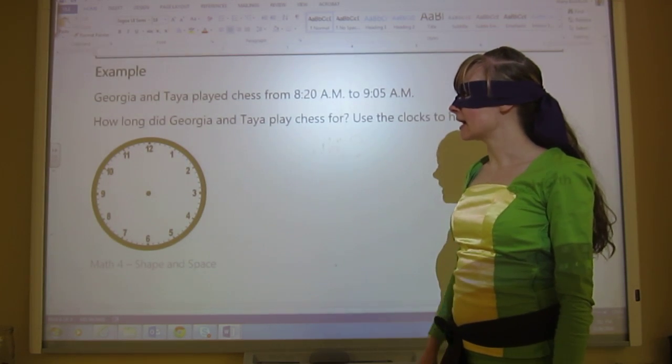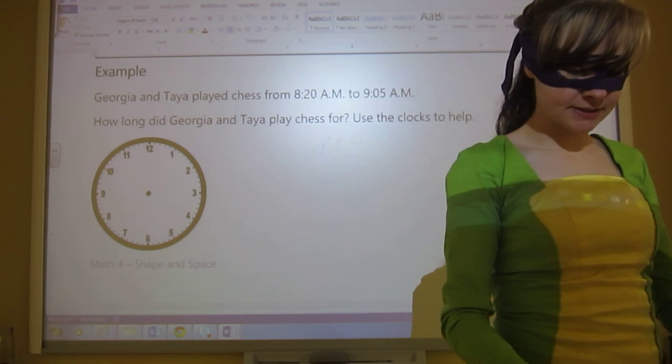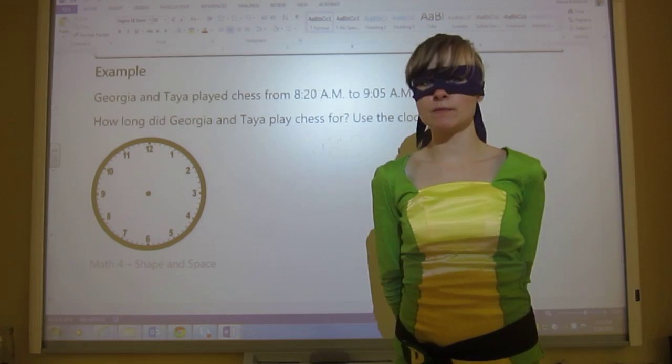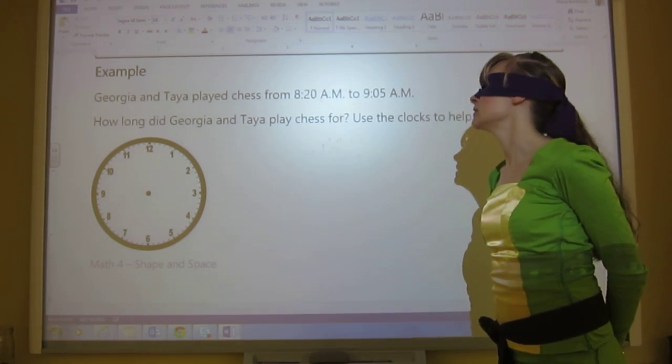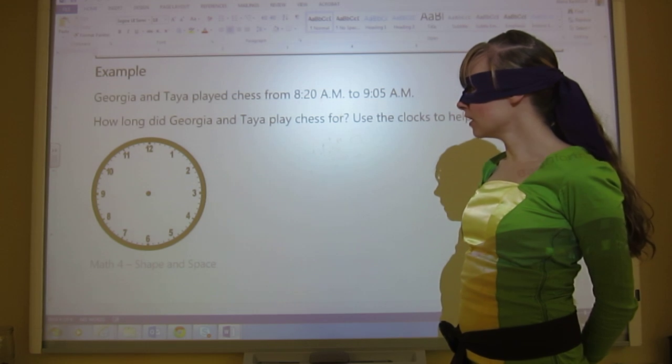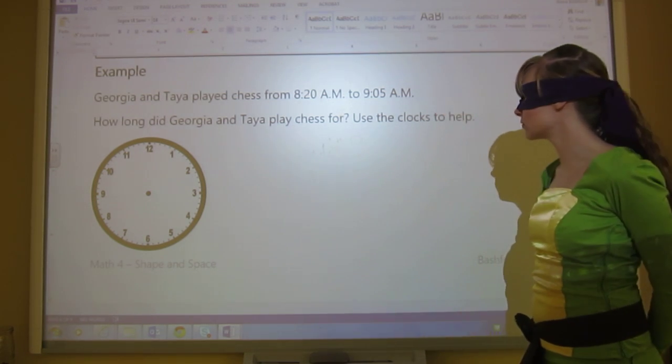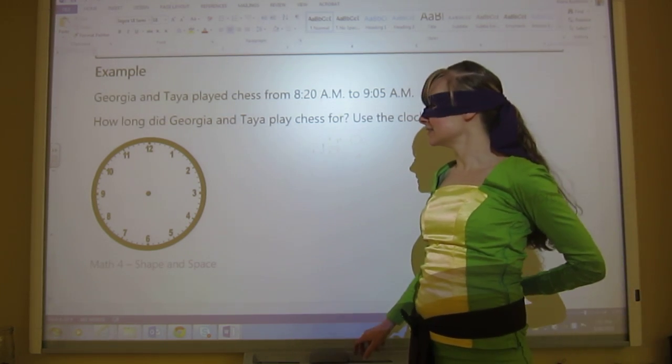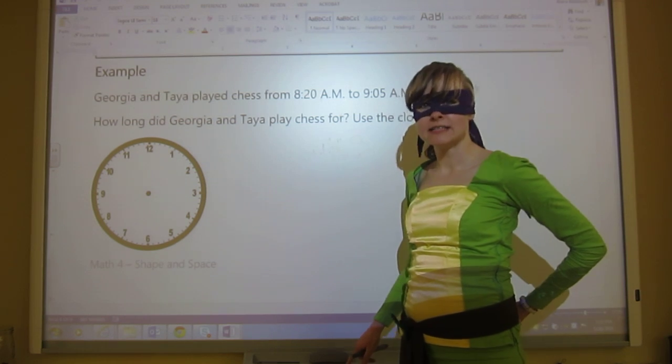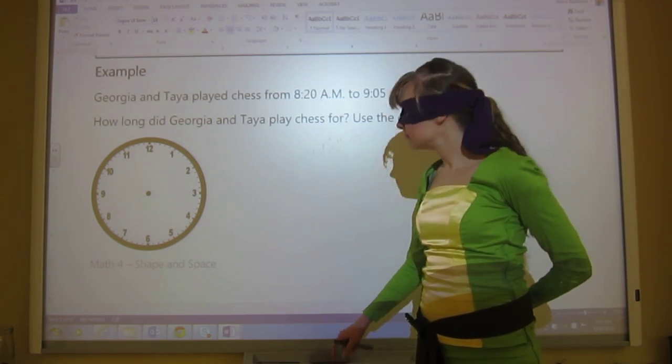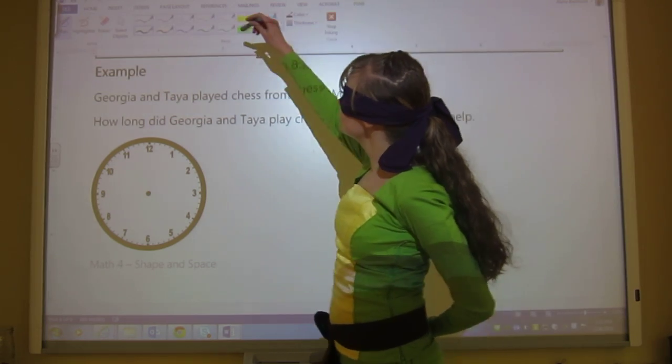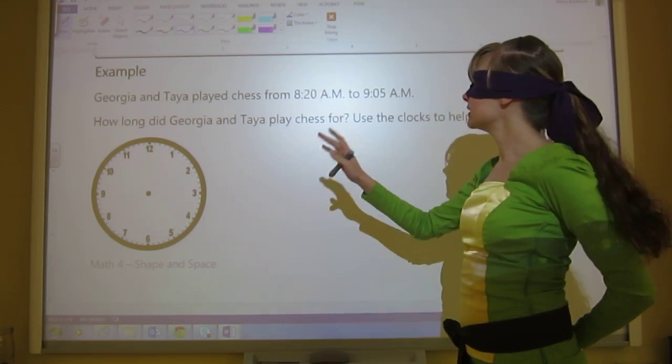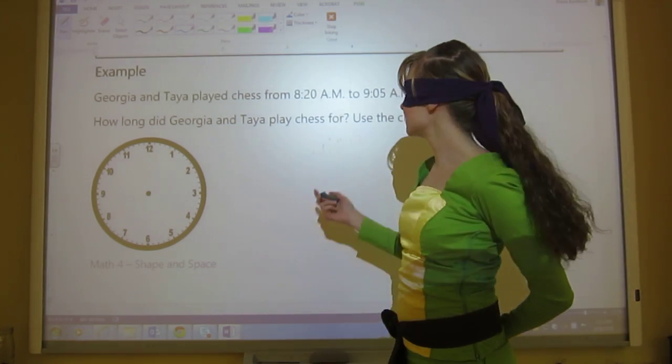Let's look at an example of elapsed time here. So it says Georgia and Taya played chess from 8:20 a.m. to 9:05 a.m. How long did Georgia and Taya play chess for? Use the clocks to help. This should say clock to help. So what we can do, and especially if I have different colors, which I can do that on the smart board, I'm going to draw on this the both of the times, and then I'll see where it goes.